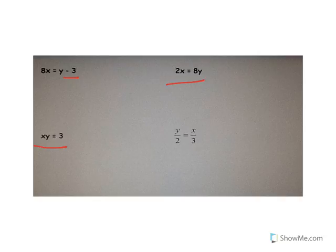Here, when x goes up, y goes down and vice versa — so that is going to be inverse variation. And this one here is also going to be direct variation.